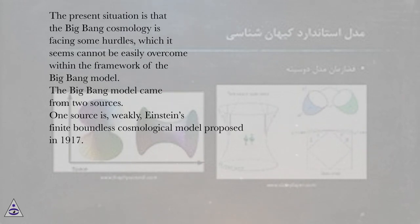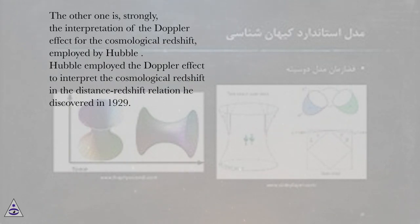The Big Bang model came from two sources. One source is, weakly, Einstein's finite boundless cosmological model proposed in 1917. The other one is, strongly, the interpretation of the Doppler effect for the cosmological redshift, employed by Hubble.